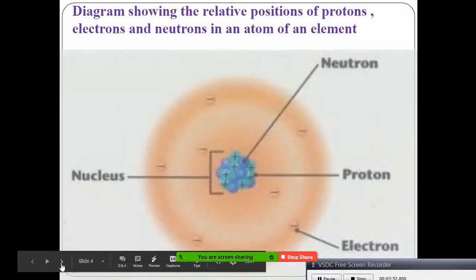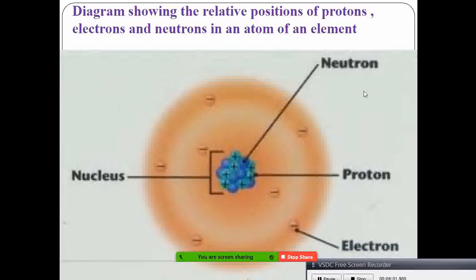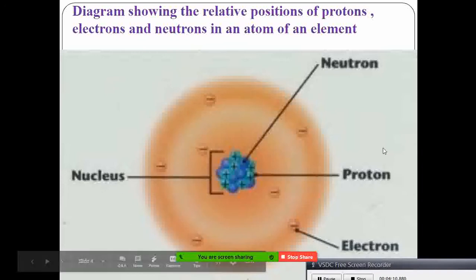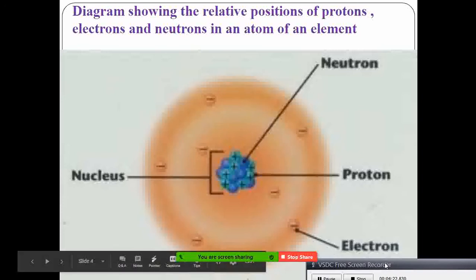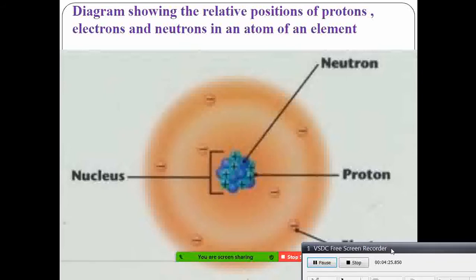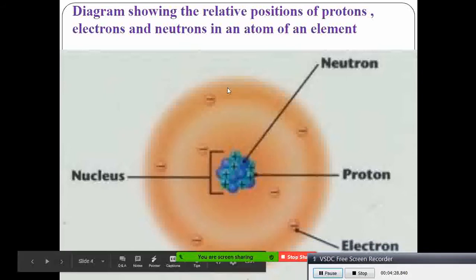I have a diagram which tries to explain what we've discussed. At the center of the atom, there is a mass where we have the positive charge, and it is surrounded by the electrons which are negative. The protons occupy the center, which is positively charged — we call this the nucleus. What is surrounding the nucleus? The electrons form a cloud of electrons.